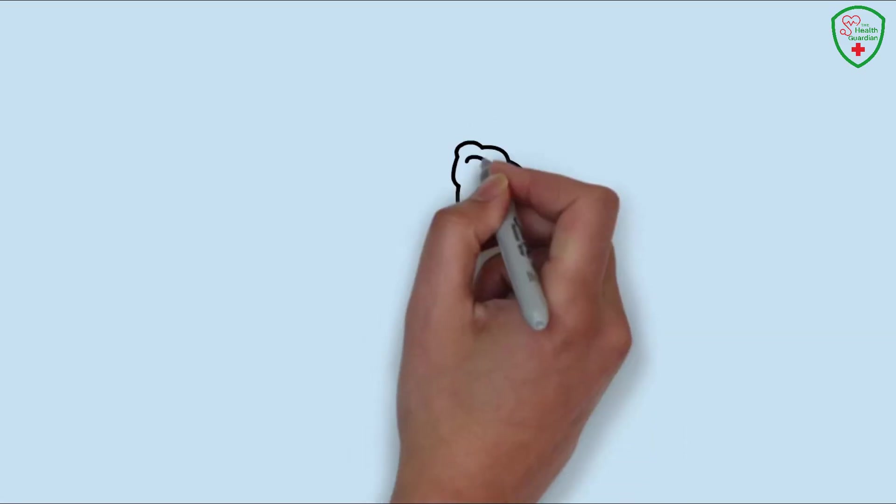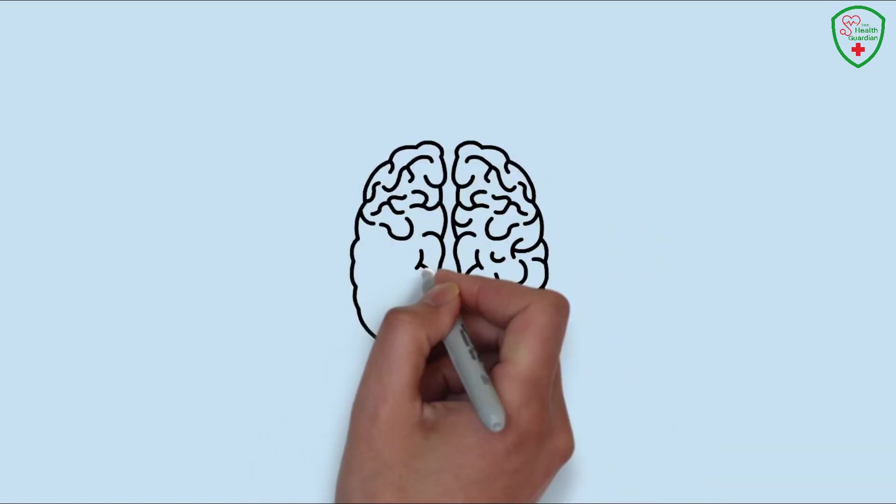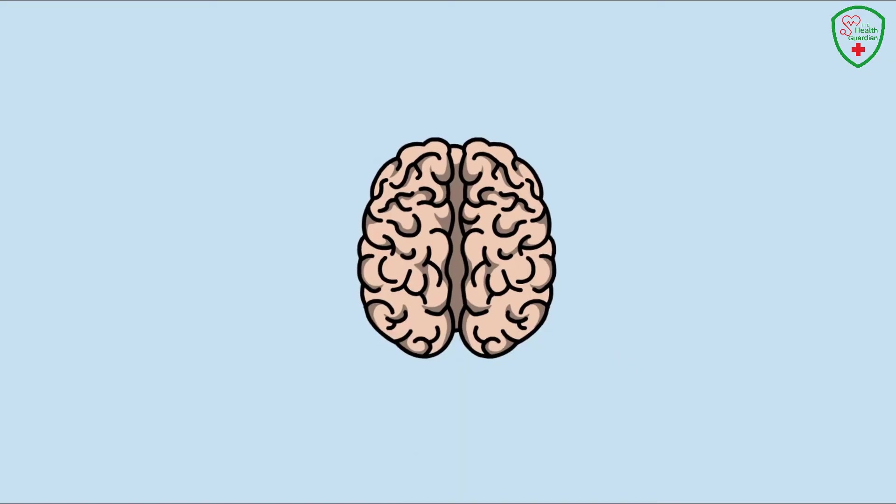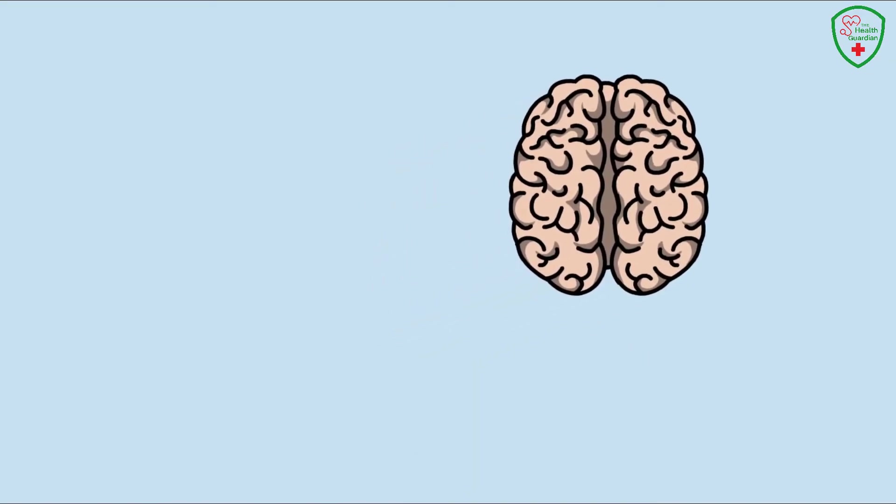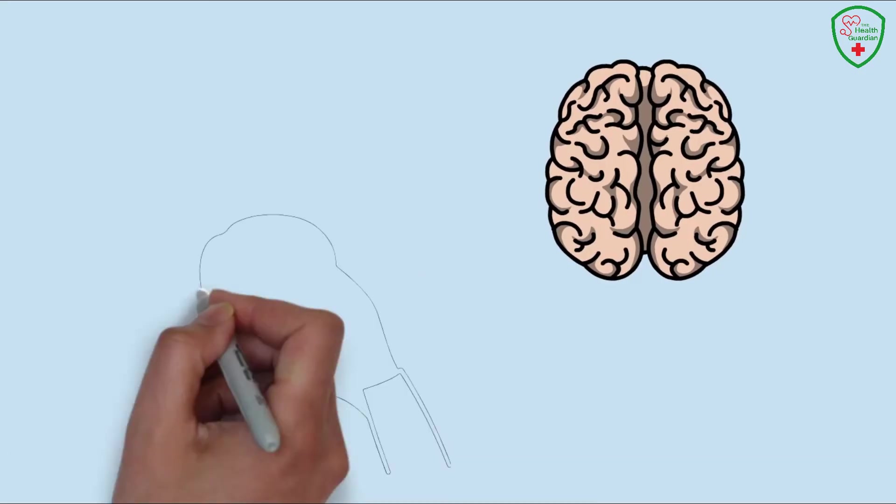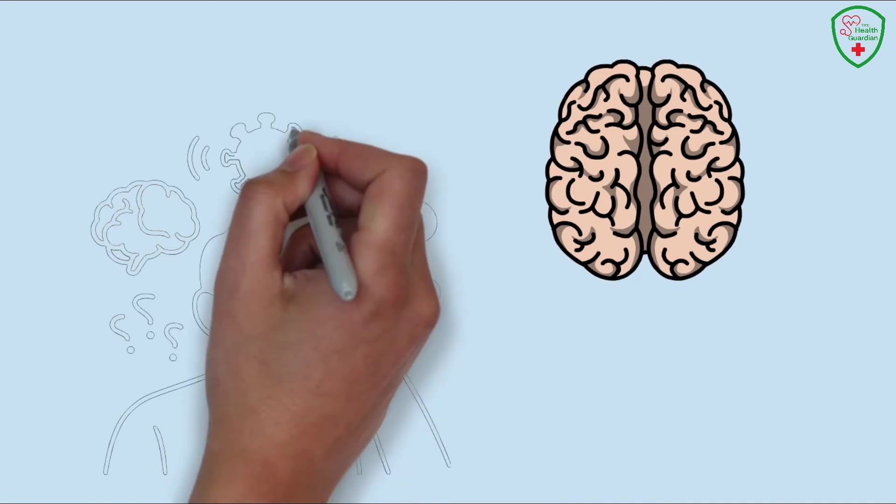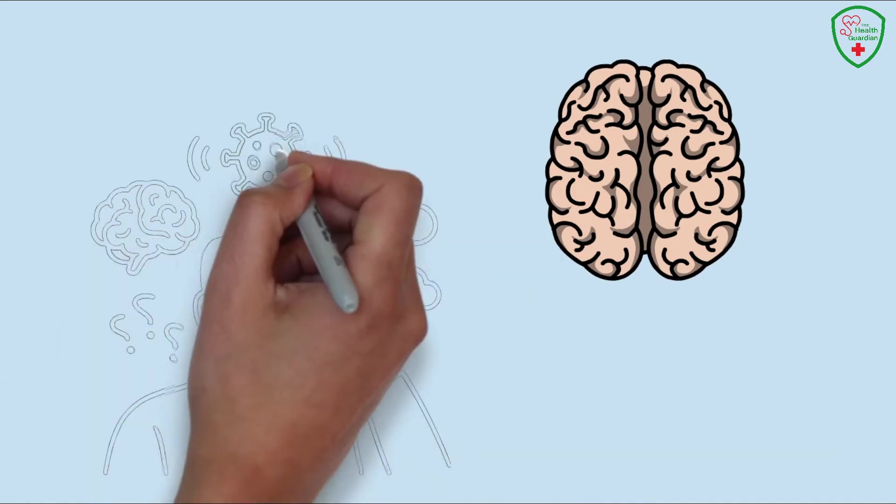Another mental curveball? Brain fog. It's like your brain's stuck in first gear, making it hard to think clearly or remember simple things. You might forget where you parked your car or struggle to finish a sentence. It's frustrating, and for some with the FLIRT variants, it feels like wading through mental molasses.